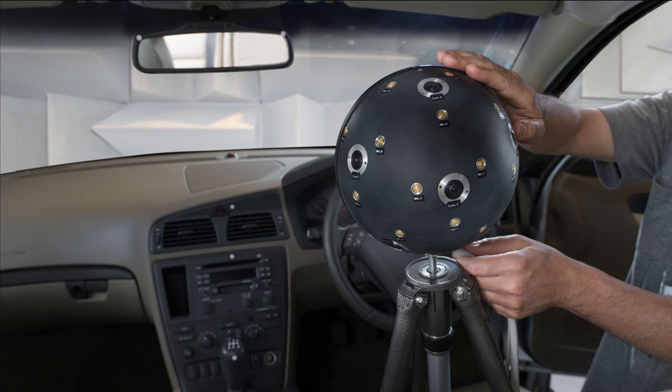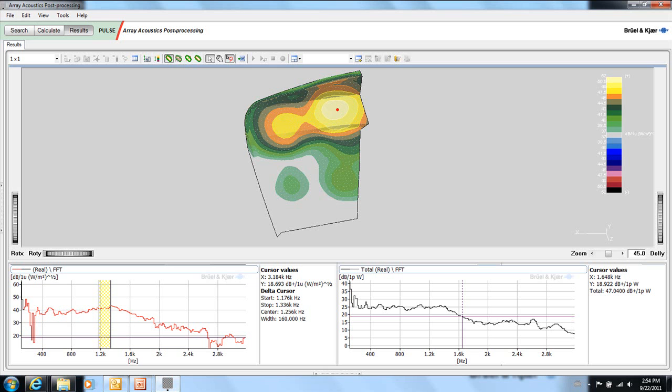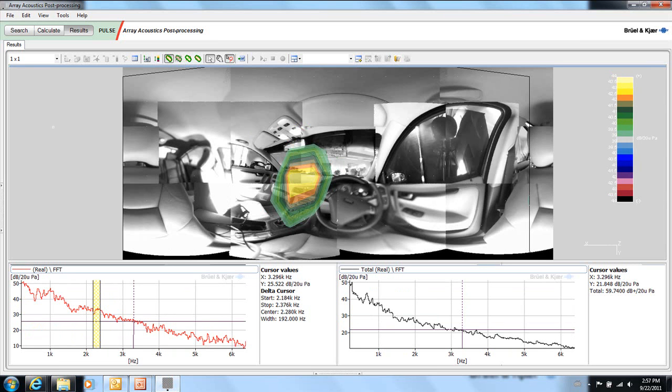Inside a vehicle, for example, a spherical array and a beamforming algorithm could be sufficient for a rough source identification.